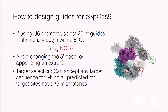A general rule of thumb for designing guides for eSpCas9 — and probably applicable to SpCas9-HF1 as well — is to pick guides that don't have mismatches at the very beginning of the guide, since these enzymes were created to reject mismatches. You want to choose guides that already start with a G in the genome, rather than changing the 5-prime base to a G when it's not already one, because that will negatively impact targeting efficiency. Also, if all predicted off-target sites have at least 3 mismatches relative to the on-target site, you can generally be confident there will be minimal off-target activity.